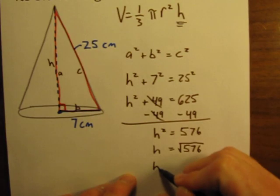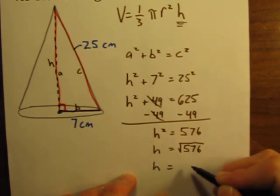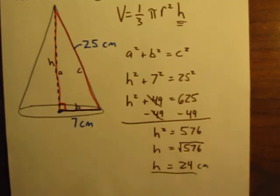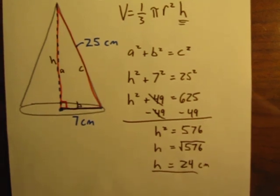So in this case, that square root works out perfectly. The square root of 576 is 24. And this is measured in centimeters. So now, all of this work that we've done so far